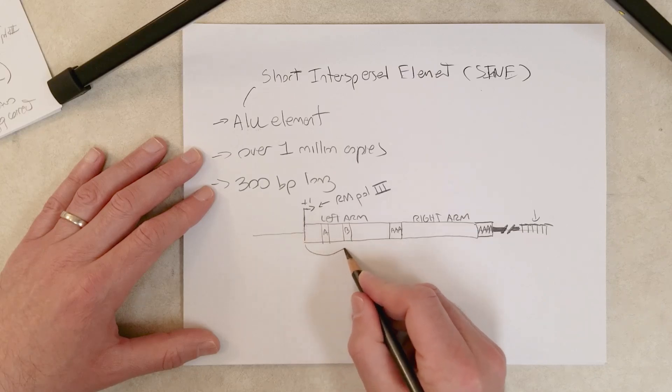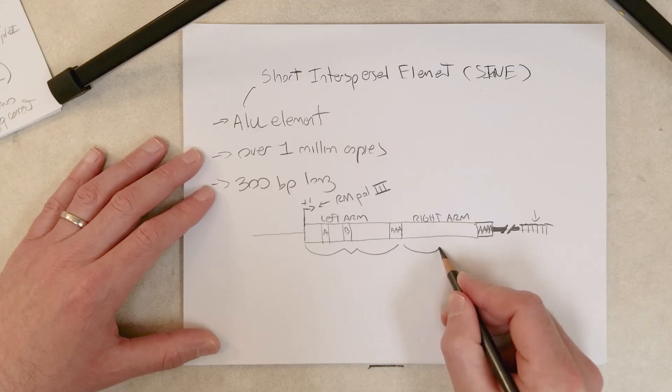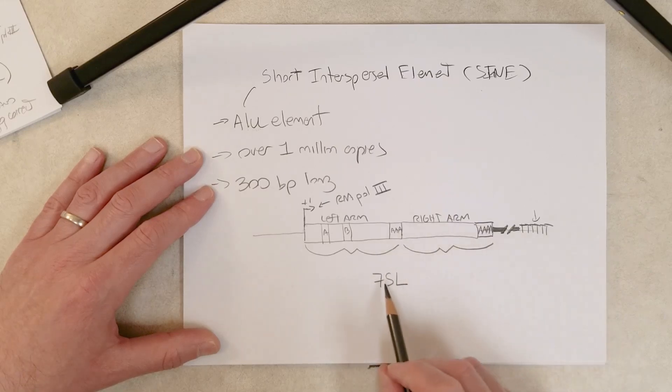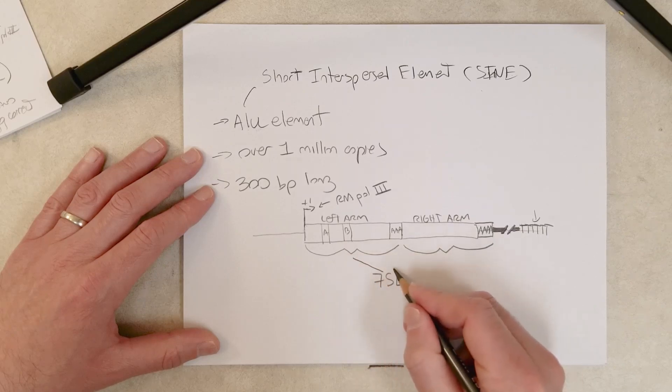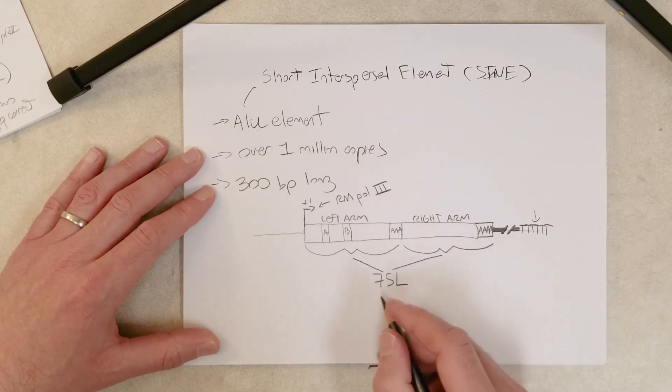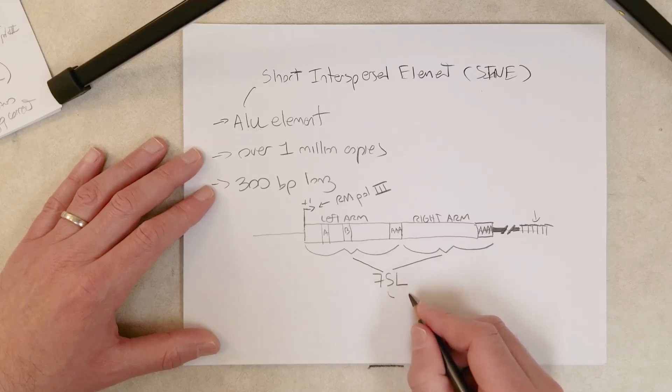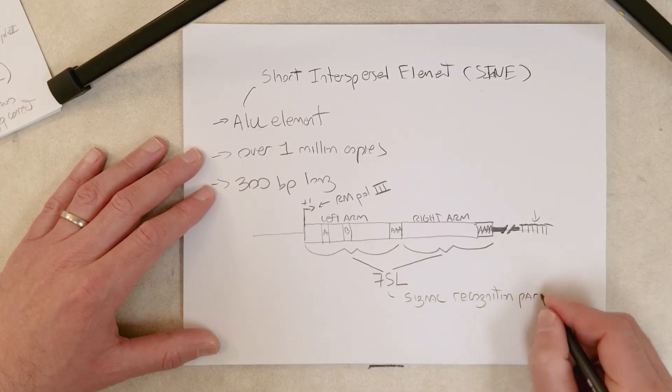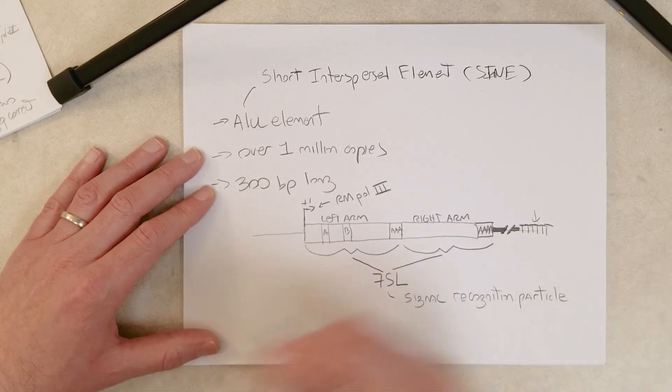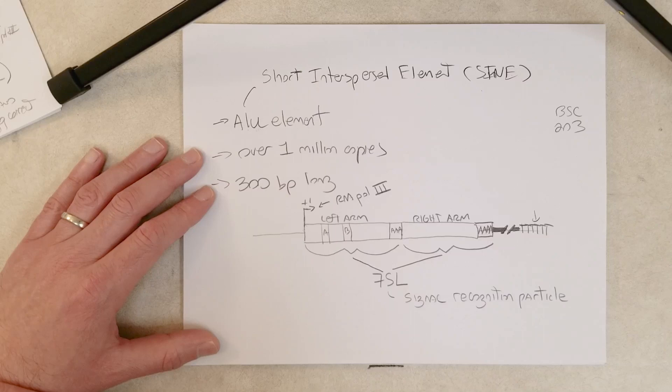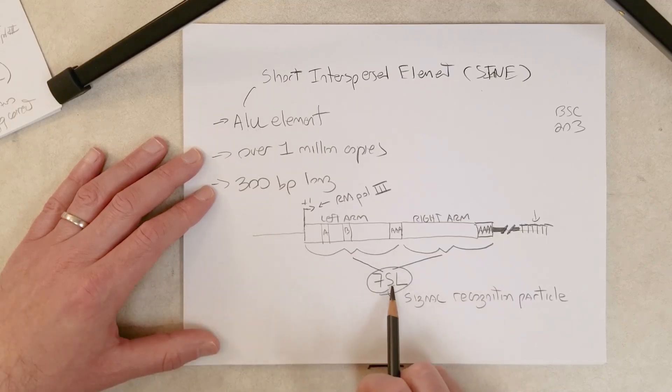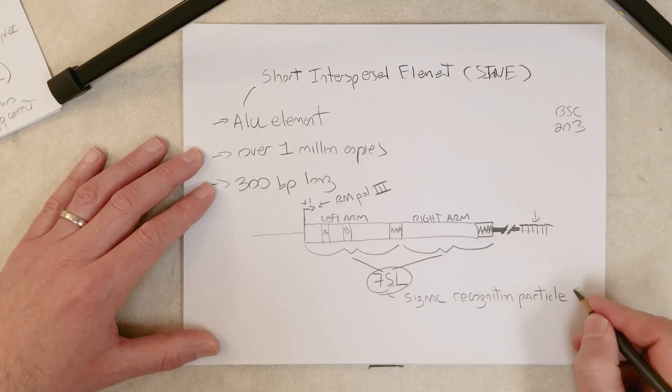Both of these arms interestingly appear to have evolved from a conserved RNA molecule called 7SL. 7SL is a non-coding RNA that forms part of what is called the signal recognition particle. Maybe you cover this in cell biology, which would be BSC203. The signal recognition particle is made up of proteins and an RNA. The RNA component is 7SL.